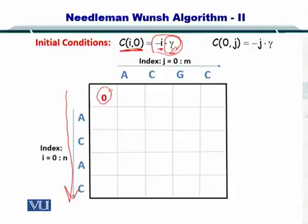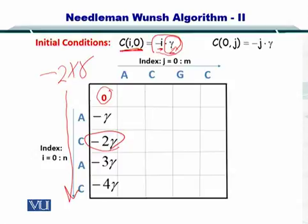So C 0, 0 will be 0. C 1, 0 will be minus gamma, minus 1 multiplied by gamma. So C 2, 0 will be minus 2 multiplied by gamma, so that's minus 2 gamma and minus 3 gamma minus 4 gamma, so on and so forth for your entire sequence like that.